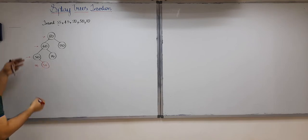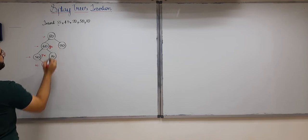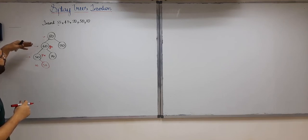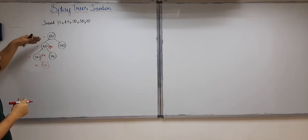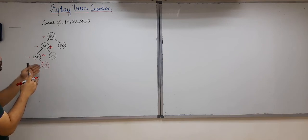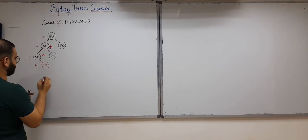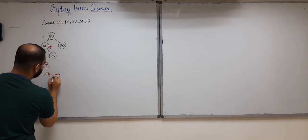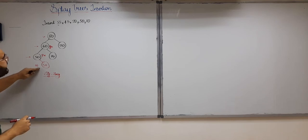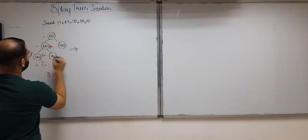We call the inserted node u, its parent pu, and its grandparent gu. The direction from the grandparent to the parent — from 60 to 50 — is left, and the direction from the parent to u is right. Because these directions are opposite, we perform the zigzag operation. The insertion of 55 is not complete until 55 is brought to the root.